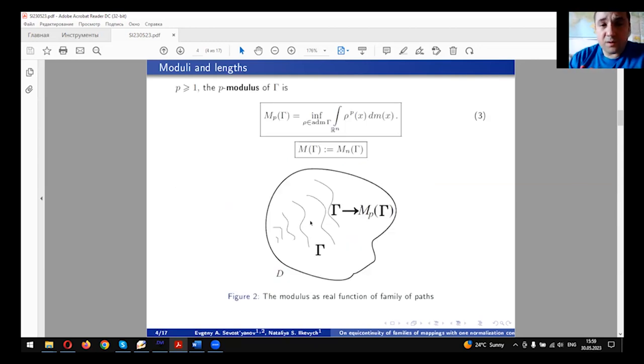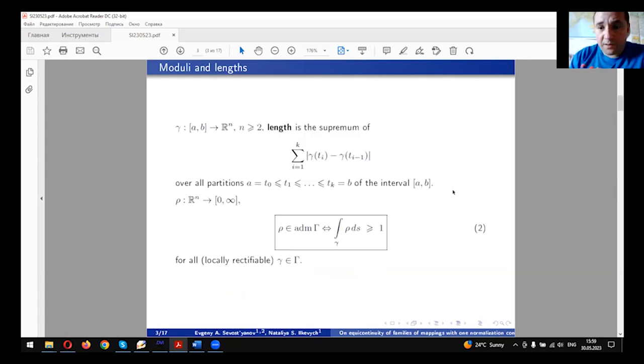P-modulus is the analog of the outer measure in the space of family of paths. Let P bigger than 1, then P-modulus of the family Γ is defined by formula (3), where the infimum is taken over all Borel measurable functions ρ satisfying the above inequality (2).